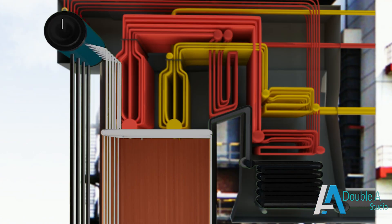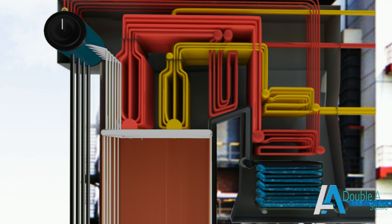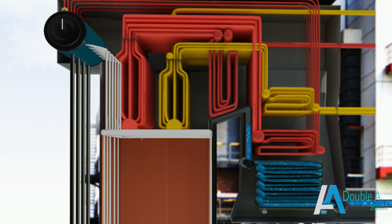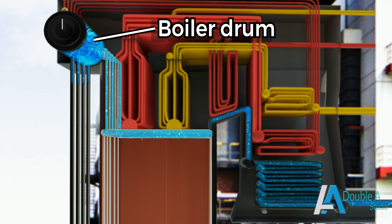To summarize this process, we can say the preheated and pre-treated water enters the boiler at the economizer inlet header. From there it goes to the boiler drum.